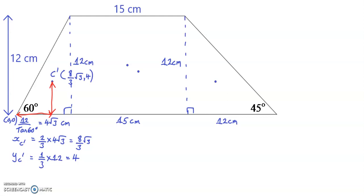I am going to denote the centroid of the rectangle as C double dashed. Relative to the origin, the x coordinate of C double dashed is 4 root 3 plus half of 15, which is 15 over 2. And the y coordinate is obviously half of 12, which is 6.